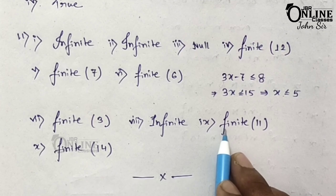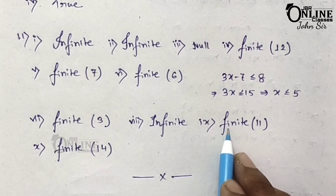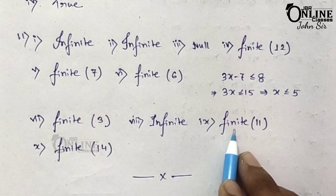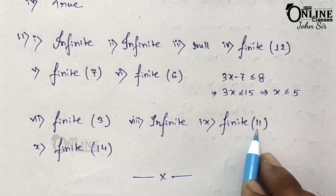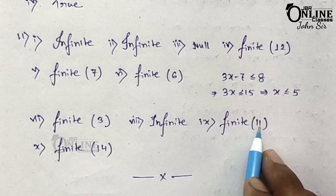Number 9: x = n/(n+1) where n belongs to whole numbers and n ≤ 10. Since there is a boundary (n ≤ 10), it's a finite set. The cardinal number is 11.